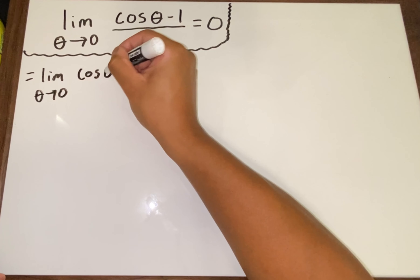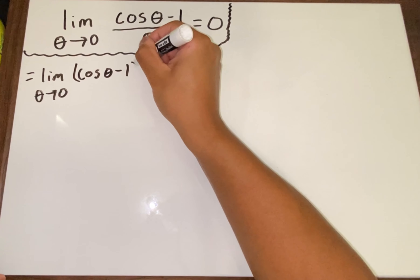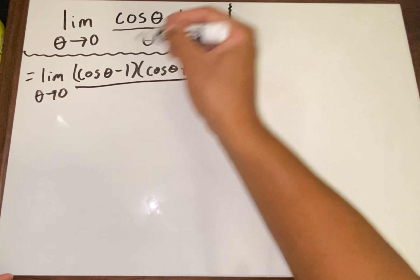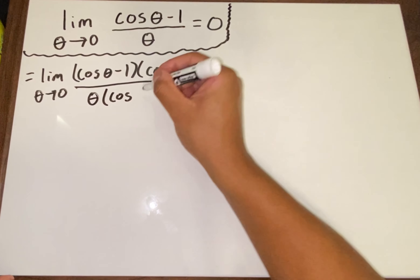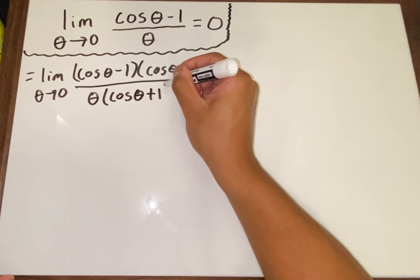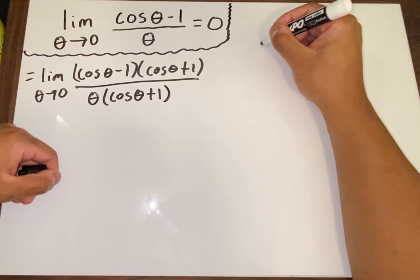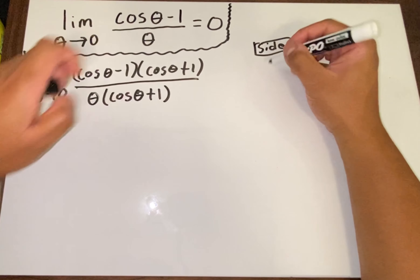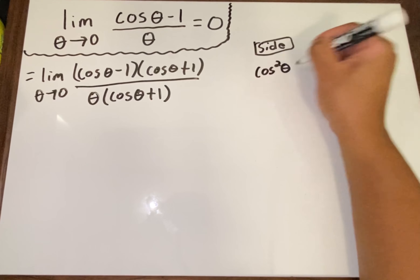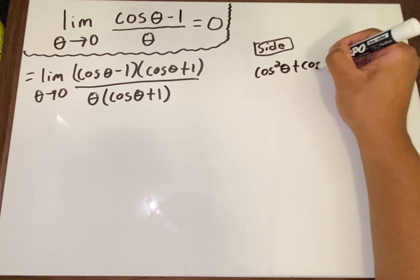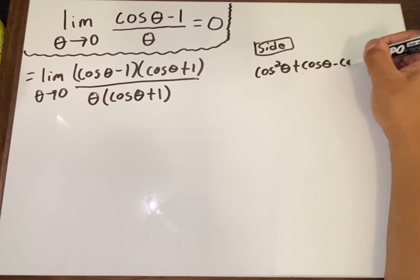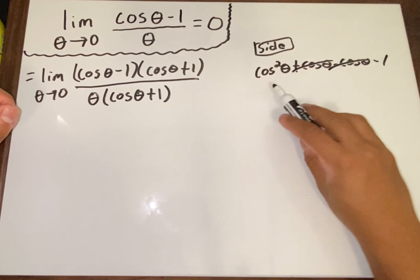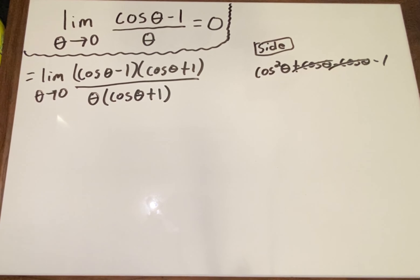That means we take (cos θ - 1) times (cos θ + 1) on top, and since we do it to the top we have to do it to the bottom as well — over (cos θ + 1). Multiplying it out: cos θ times cos θ is cos²θ, and the middle terms — cos θ and negative cos θ — cancel.